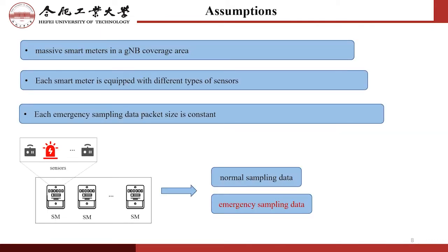First, we made some reasonable assumptions about this research. We consider a general AMI sensor scenario in ADN that consists of only one next generation Node B and a number of smart meters within its coverage area. Each smart meter is equipped with different types of sensors, which can sample data at different fixed intervals. When some fault occurs in the ADN, we assume that the sampled data can be divided into two categories: normal sampling data and emergency sampling data. It is reasonable to assume that each emergency data packet size is also constant because the data type is only a fixed-size packet in transmission.